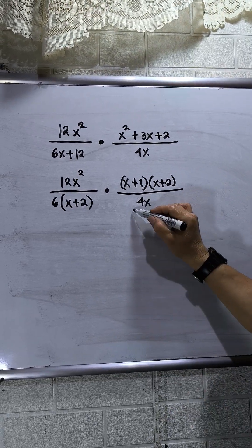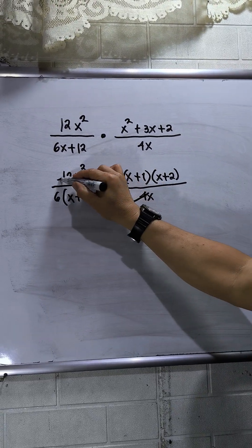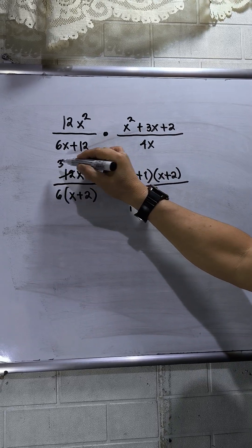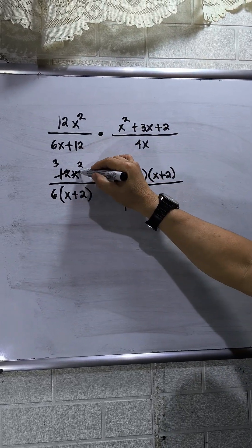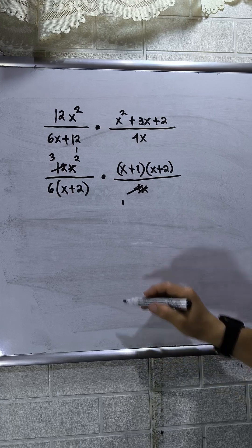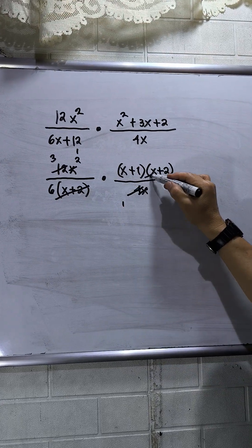So divide this one by 4, this is 1. Divide by 4, this is 3. Then cross out x, so I have 1x here. x plus 2 will be crossed out.